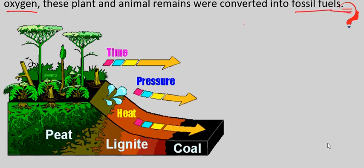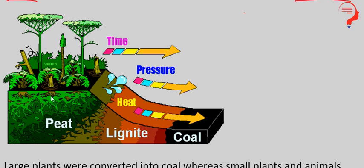As you can see in the picture, yahan pe jitne bhi aapko picture mein dikh raha hai — green plants hain. Jitne bhi green plants hain, yeh sab jab damage ho jayenge, jab khatam ho jayenge, jab evolution hoga, new changes aana shuru hoga, toh jitne bhi remaining particles hain, woh sab buried down ho jaate hain earth ke niche — aur phir usko hum long peat bolte hain.